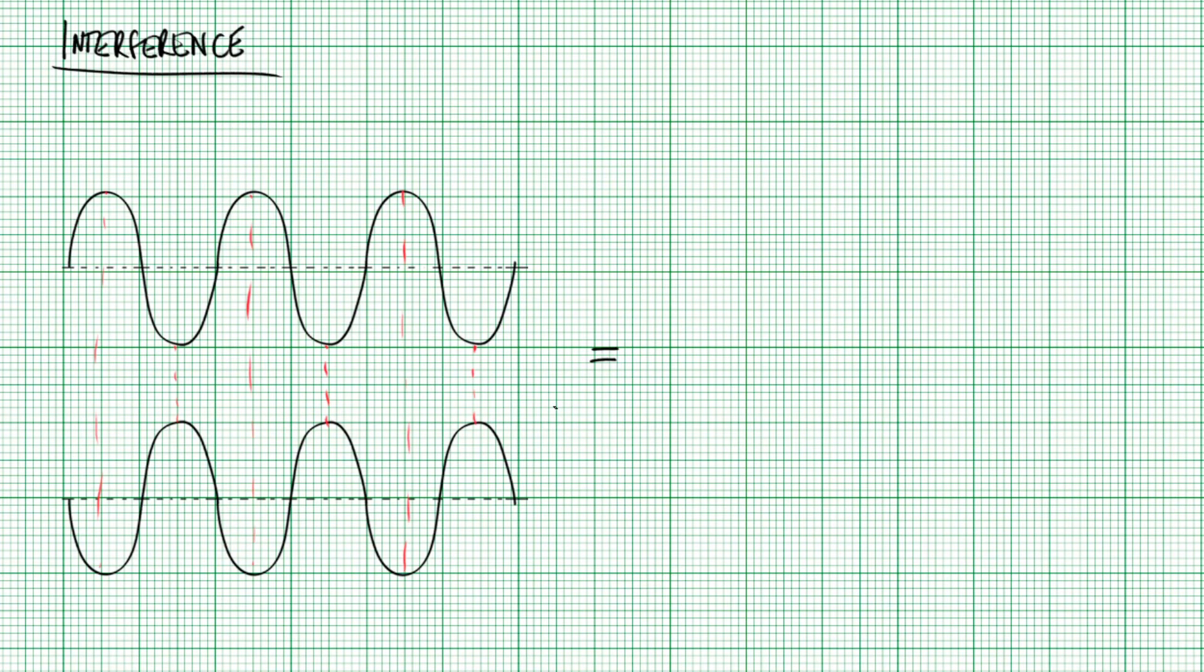And what's happening here is just the same. The amplitude at each point adding together but here what they're effectively doing is they're cancelling each other out so you would end up with no wave pattern whatsoever. This is what we call destructive interference and this is what happens when the waves are out of phase.